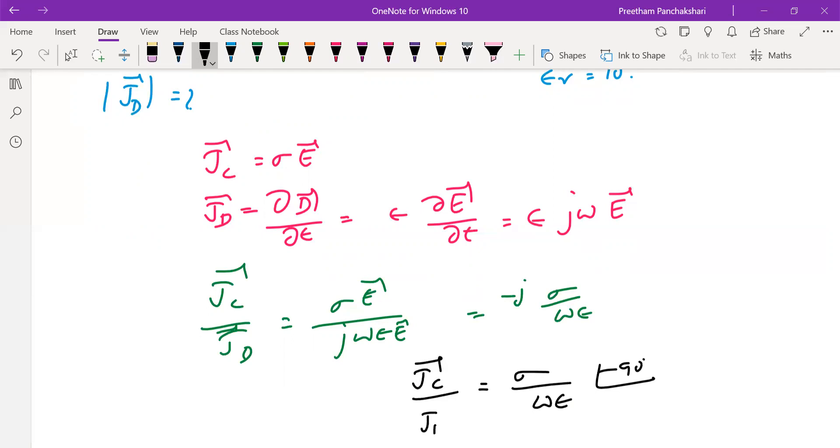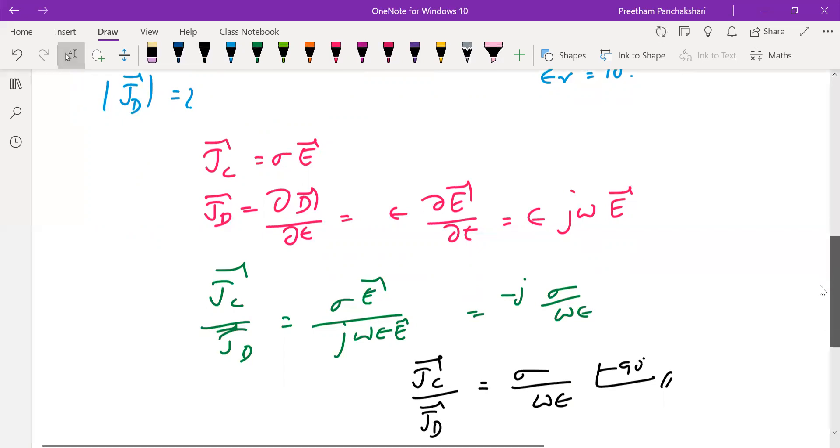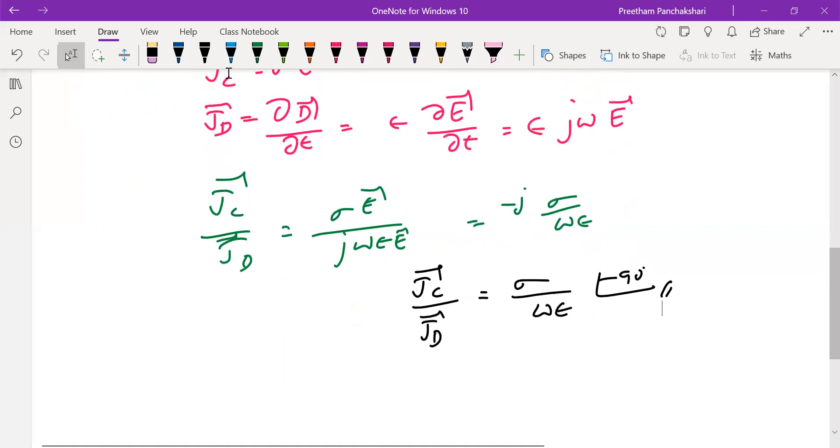That means the conduction current density lags behind the displacement current density by an angle of 90 degrees. So this is what is the relation between Jc and Jd. We can find one from the other, but in this problem it is asked to find only the amplitude.